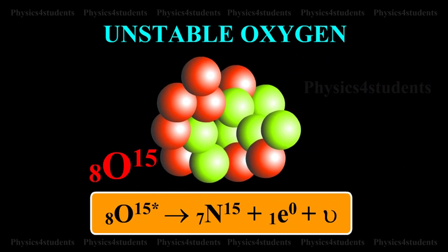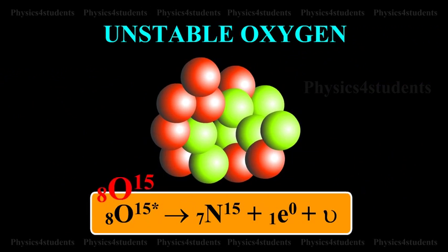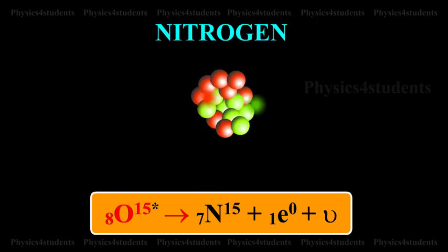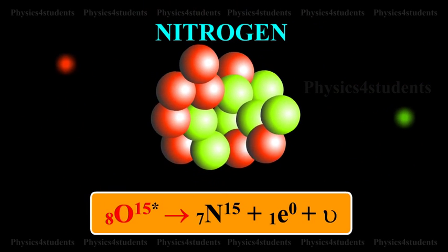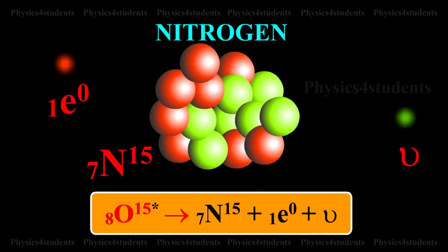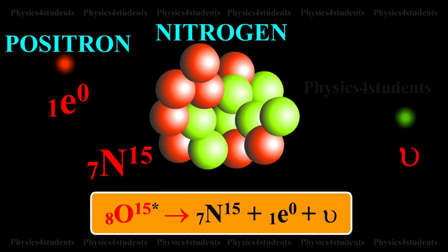This unstable oxygen disintegrates into Nitrogen, i.e. 7N15, a positron and neutrino.